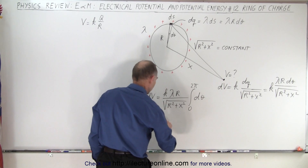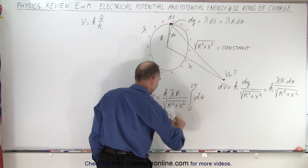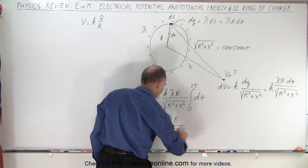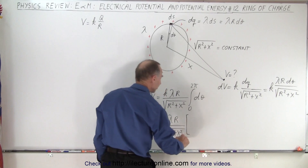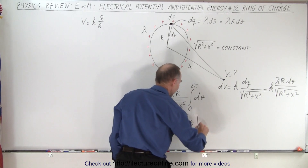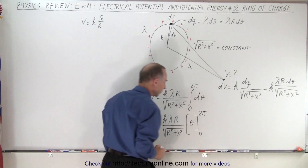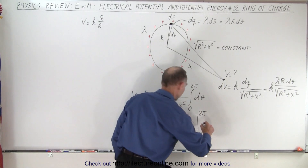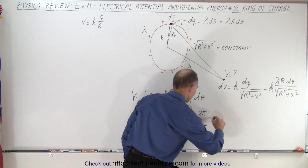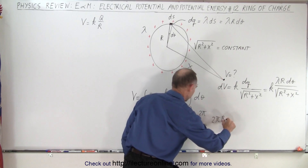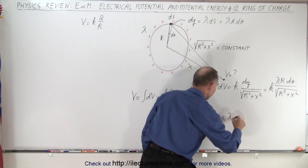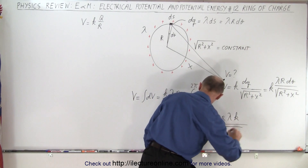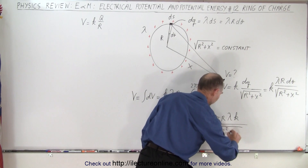This becomes equal to k times lambda times r divided by the square root of r squared plus x squared, multiplied by theta evaluated from 0 to 2π. The integral of dθ is theta; plugging in the lower limit gives zero, and plugging in the upper limit gives 2π. So this becomes equal to 2πr times lambda times k, all divided by the square root of r squared plus x squared.